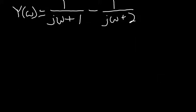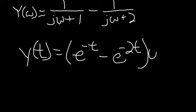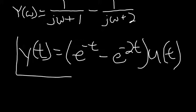Using Y(omega) and the property given on the previous slide, we can calculate that y(t) equals e to the minus t minus e to the minus 2t, all times u(t).